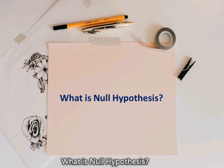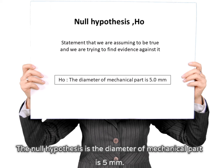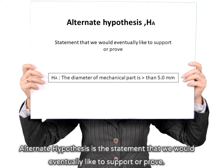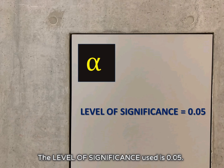What is null hypothesis? The null hypothesis is the statement that we are assuming to be true and we are trying to find evidence against it. The null hypothesis is: the diameter of the mechanical part is 5 millimeters. What is alternate hypothesis? The alternate hypothesis is the statement that we would eventually like to support or prove. The alternate hypothesis is: the diameter of the mechanical part is greater than 5 millimeters. The level of significance used is 0.05.